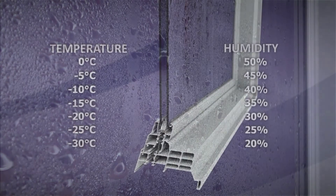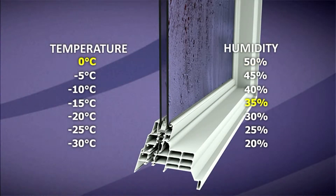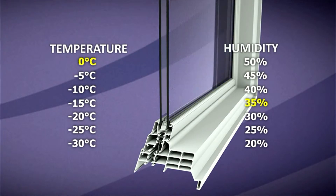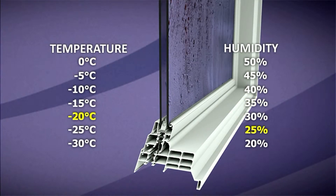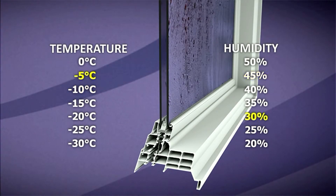The higher the moisture level in the air, or relative humidity, or the colder the glass surface, the heavier the condensation. Energy efficient KV windows and doors are less likely to have condensation because of their wide range of insulated glass unit options.